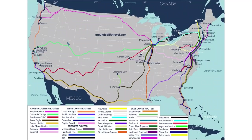Another consideration is whether to get on at the nearest city or at a terminus station. On cross-country routes, trains sometimes pass through a city in the middle of the night, so you might not want to board at 2 a.m. You can look at the schedule and decide whether to board at the closest city or travel to a terminus station and add a bit of time to your trip.